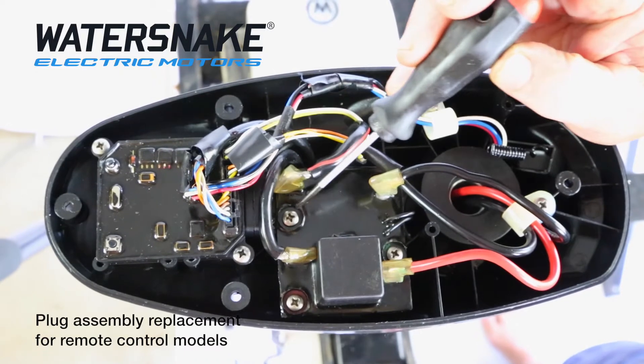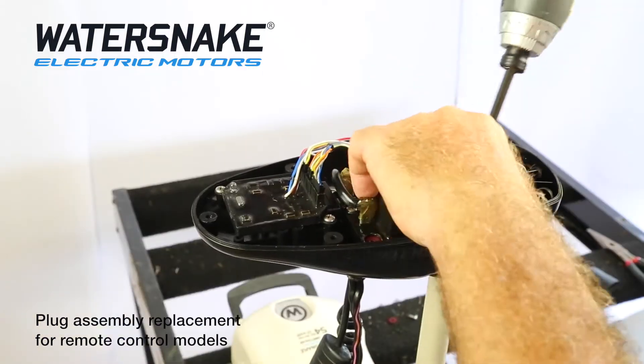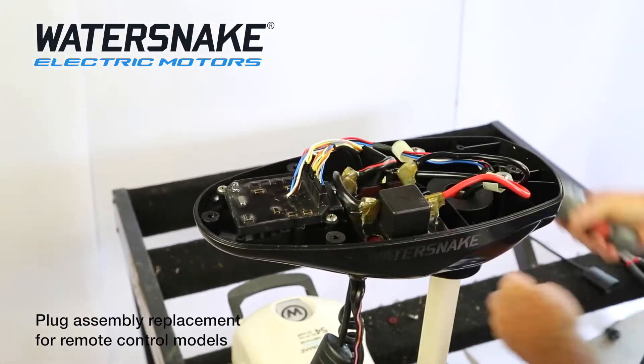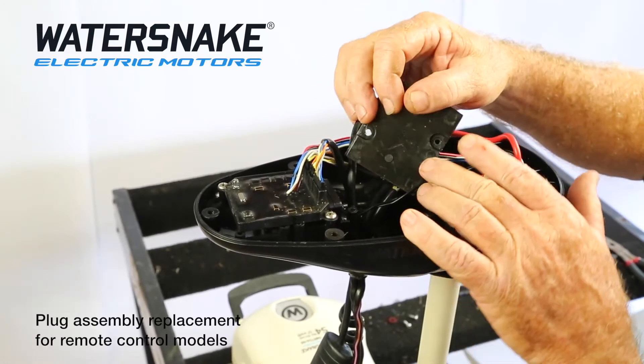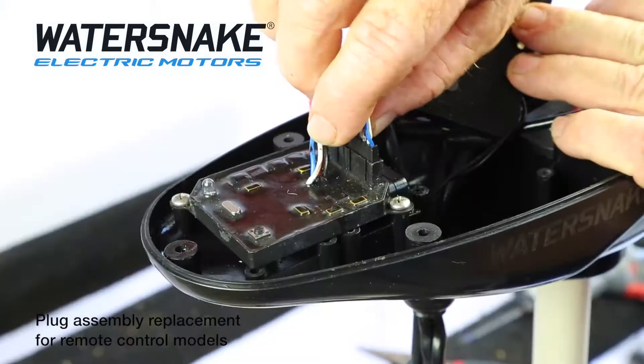remove the three screws that hold your circuit board in. Much easier to work. Now this is a bit longer way of doing it, but it's a lot less fiddly. We need to remove the main